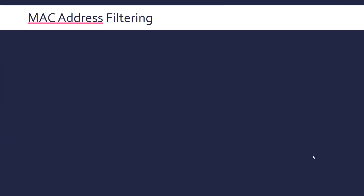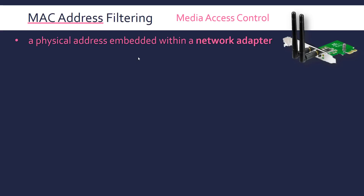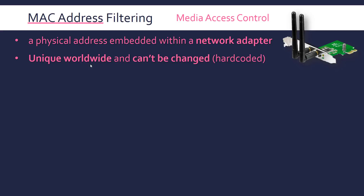A very similar process is MAC address filtering. MAC stands for Media Access Control, and it is a physical address embedded within a network adapter. To connect to a network you need a network adapter, and every device connected to a network has one. Every network adapter has its own unique MAC address — unique worldwide — and you can't change it because it's hard-coded into the device.